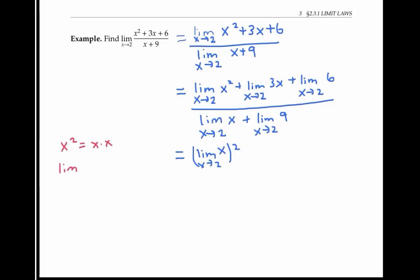And so the limit of x² is really the limit of x times x, which by the product rule is the limit of x times the limit of x, which is the limit of x quantity squared.